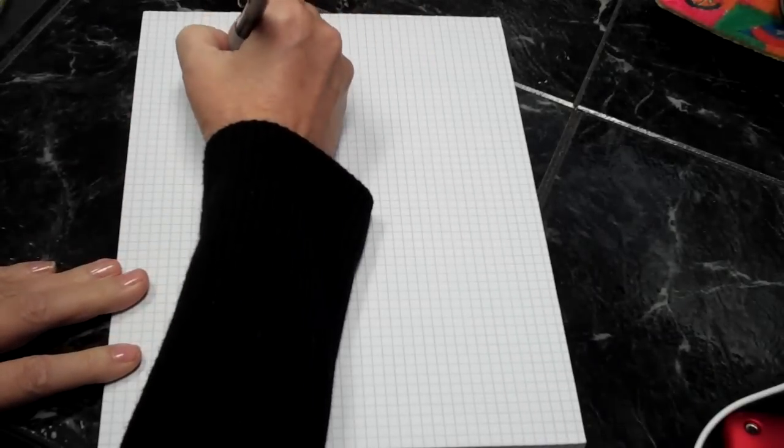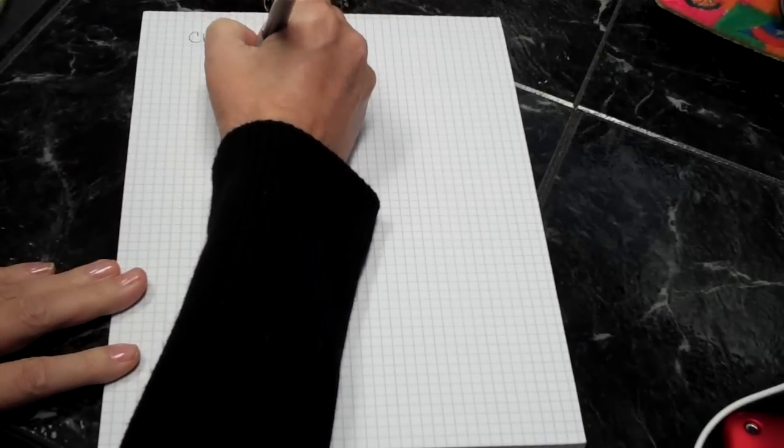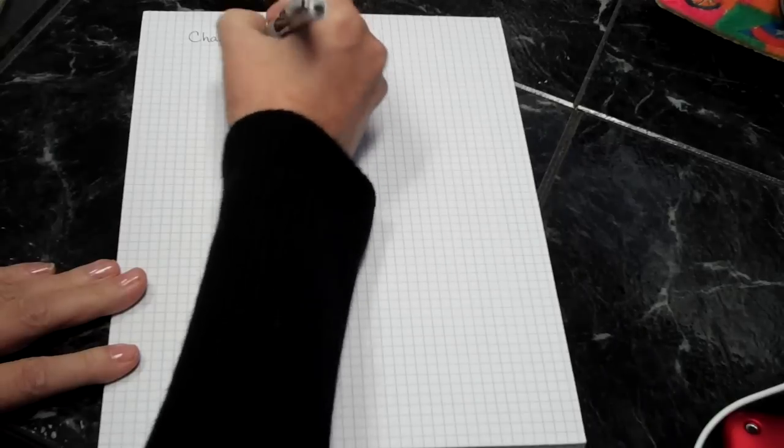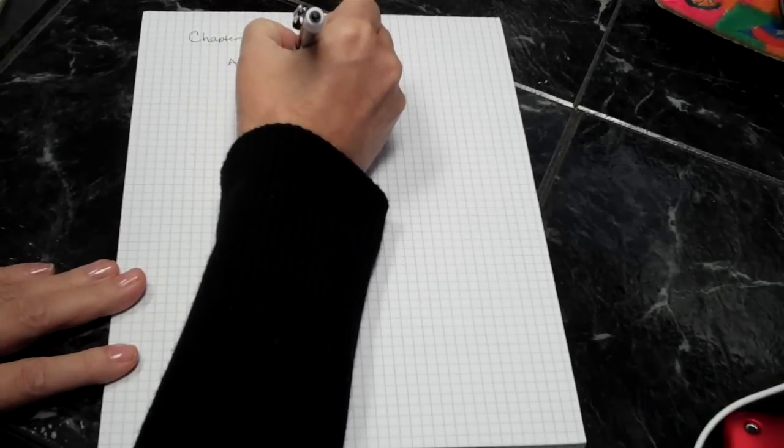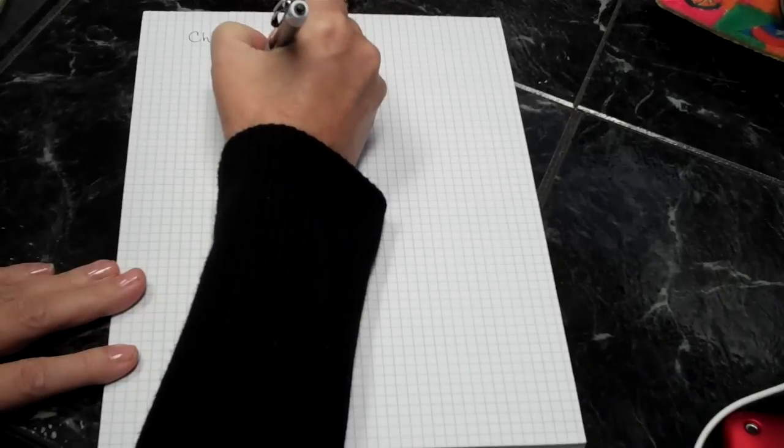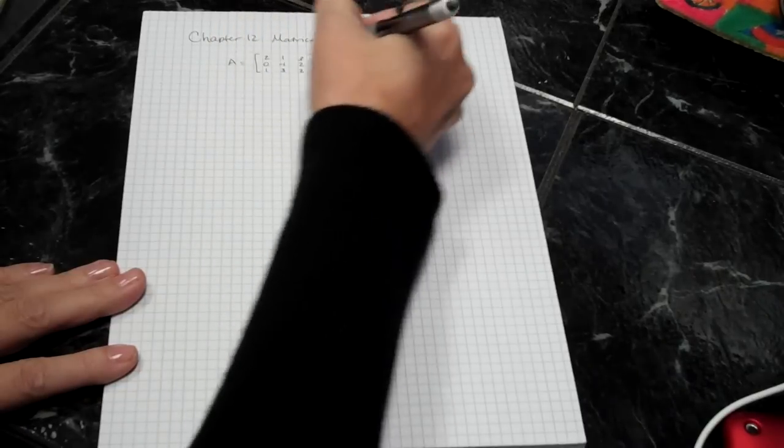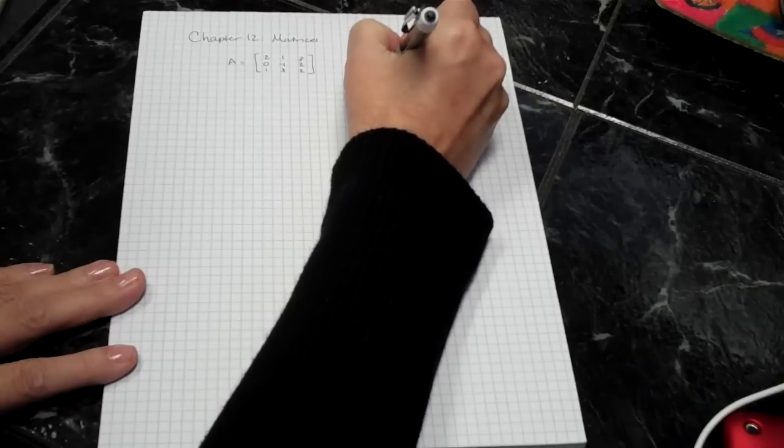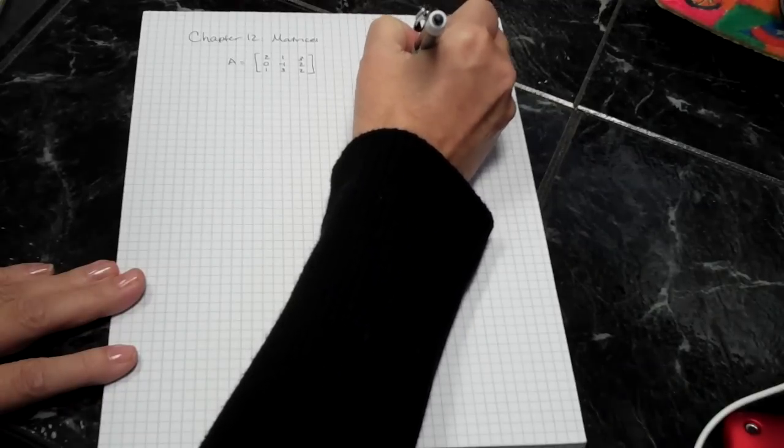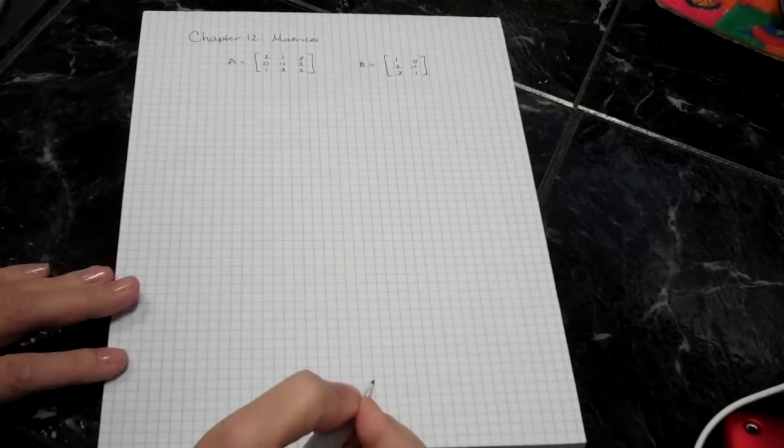First of all, a matrix is really just an ordered set of numbers. It comes across in rows and columns, so, like 2, 1, 3, 0, negative 1, 2, 1, 3, 2 is a matrix, or 1, 2, 3, 0, negative 1, 1 is a matrix.